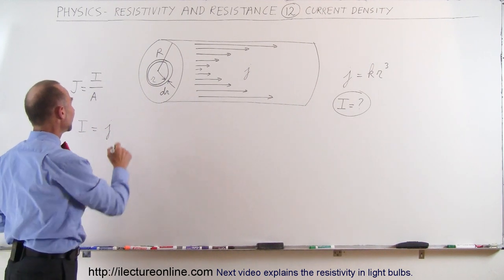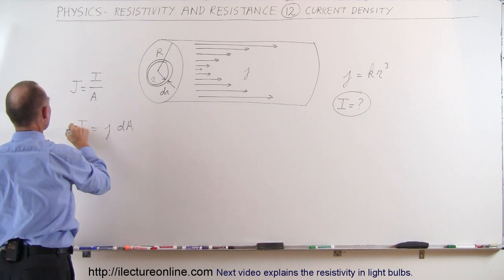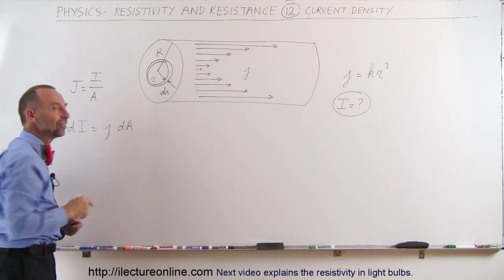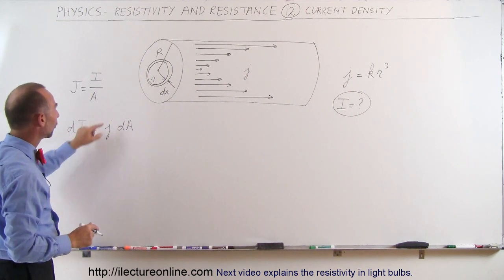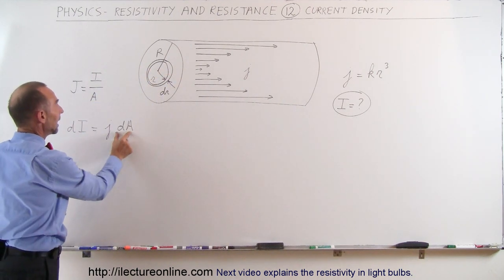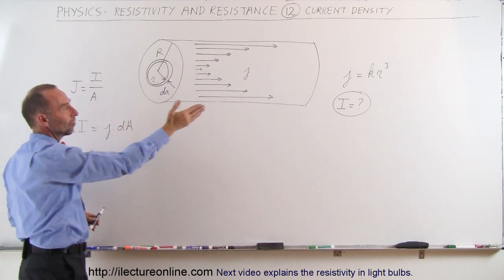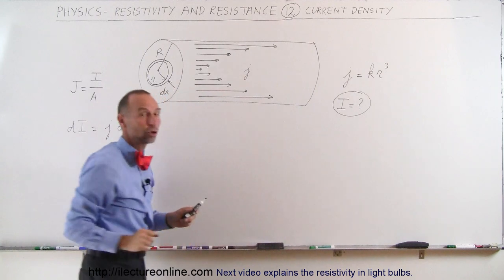So it'll be the current density times the area. So it's going to be a DI and we're going to call that a DA. So a small amount of current goes to this portion of the cylinder of the conductor. The area will be the surface area of this little ringlet and J will be the current density according to the equation KR cubed.